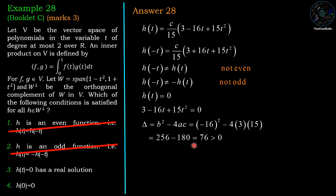We have the value of delta which is 76, greater than 0, and hence this quadratic equation has real solutions. And therefore the third option, that h(t) equal to 0 has real solution, is correct.